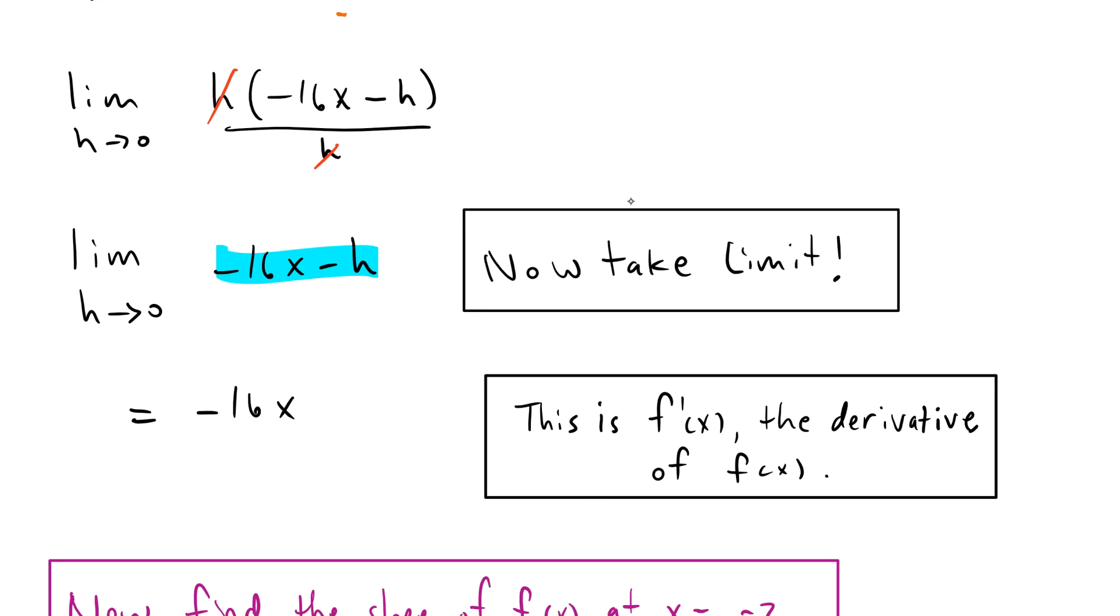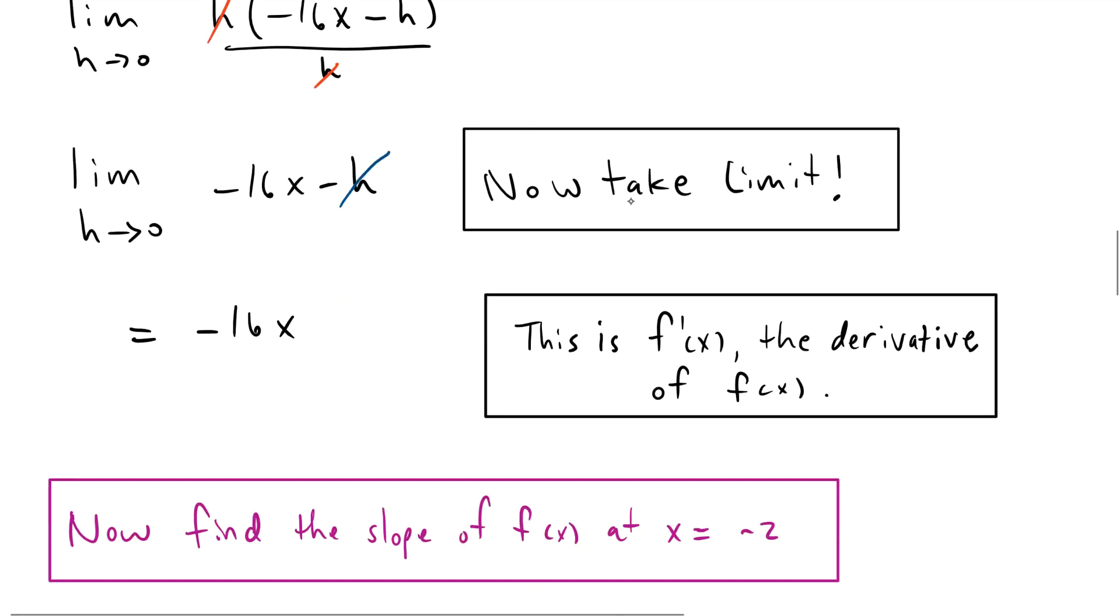The h is gone in the denominator. We no longer have a denominator. So now we can take the limit. This h goes to zero and we're left with negative 16x. So this negative 16x, this is the derivative function. This is f prime. This is the function that we can plug in an x value anywhere and get out the derivative, the slope, at that point, at that x value.